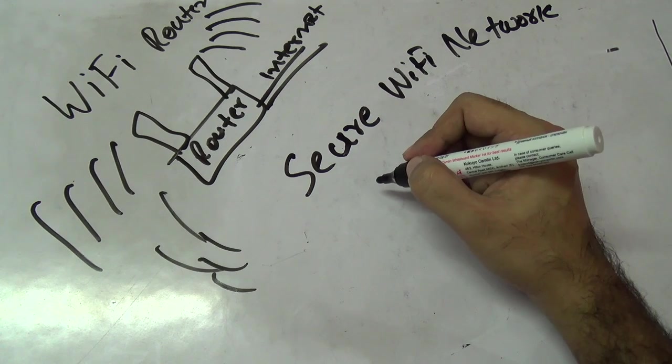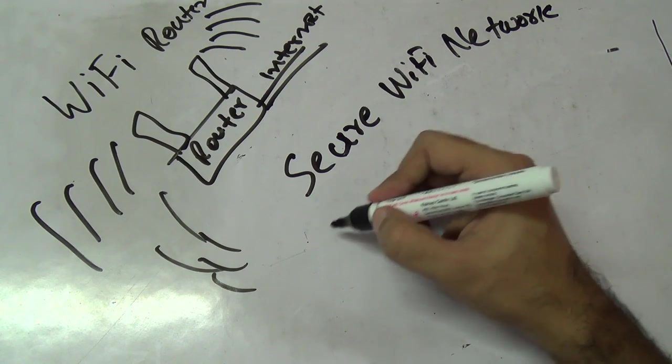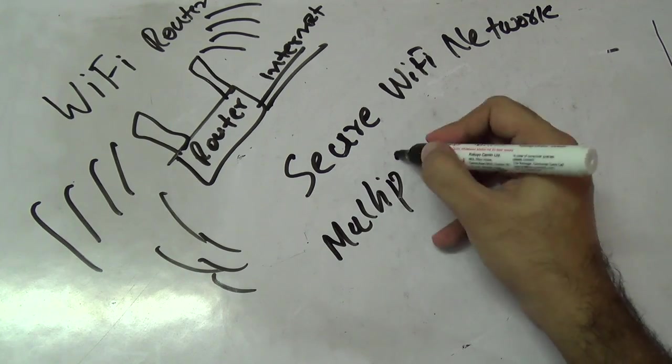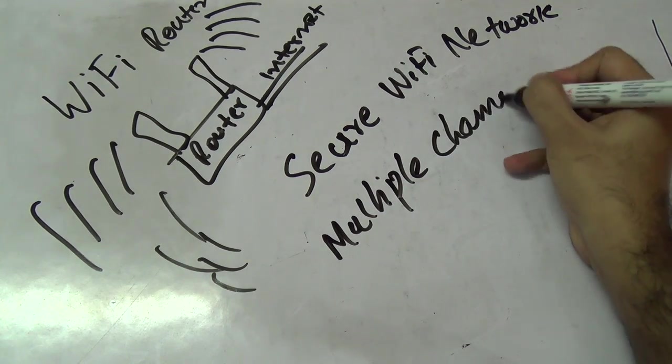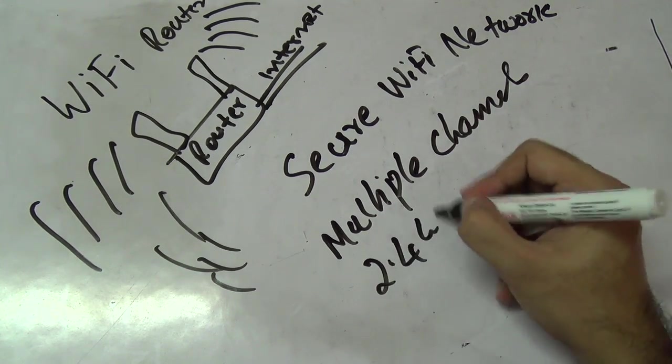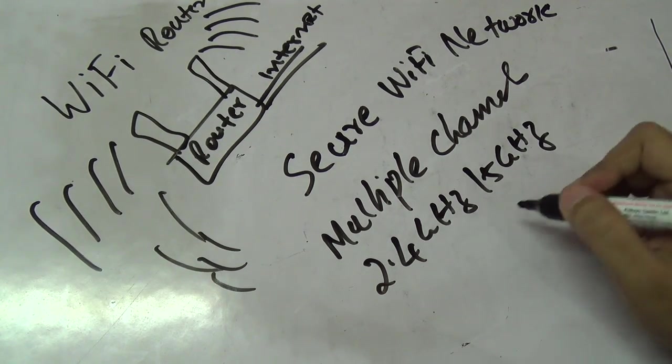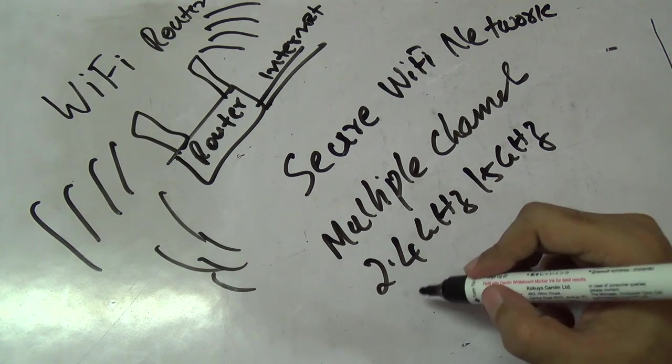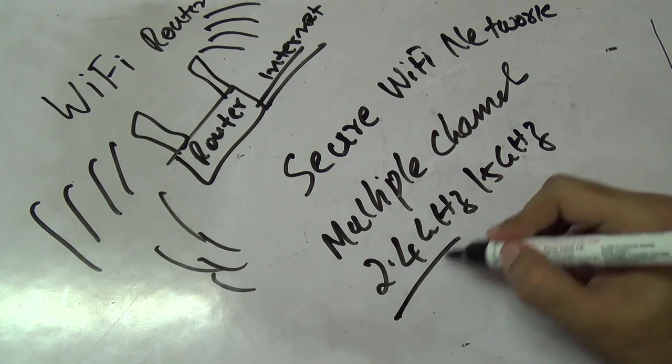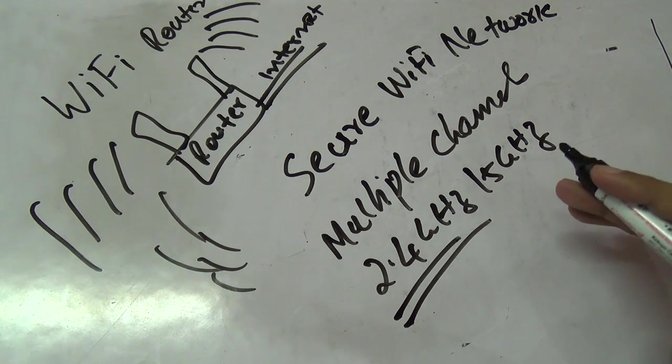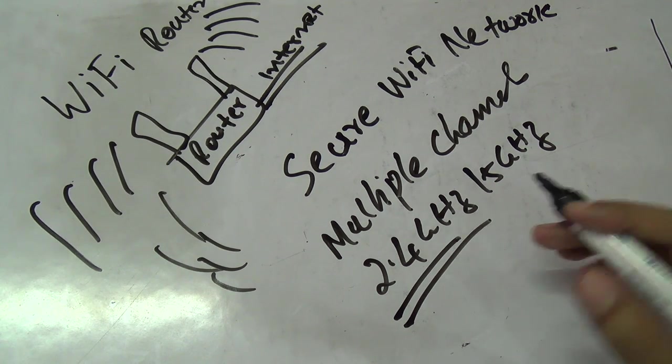There are different standards by which you can secure it, and I'm going to talk about that. Also, we have multiple channels available on the router on this 2.4 gigahertz frequency and 5 gigahertz frequency. If you're having some network issues or you're not getting the range, you might be able to get that by changing the channels. I'll also talk about best practices for how to get the best Wi-Fi signal.